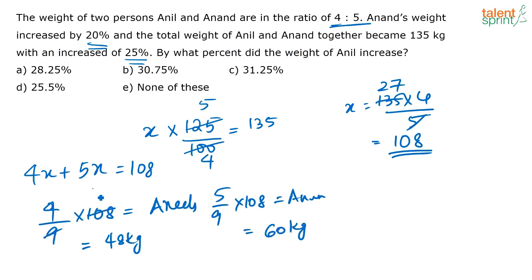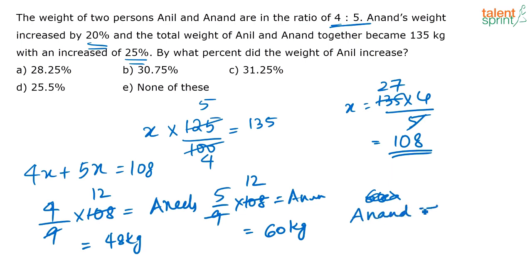12 goes into both: 12 × 4 = 48 and 12 × 5 = 60. These were the earlier weights of both of them. Now, Anand's weight has increased by 20%. It was 60 kg, so 10% of 60 is 6, meaning 20% of 60 is 12. Anand's weight has now become 72 kg.